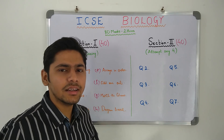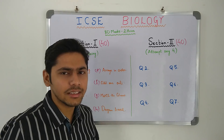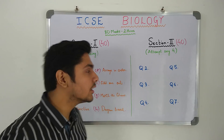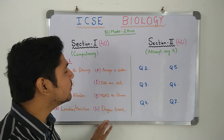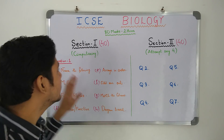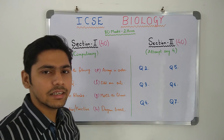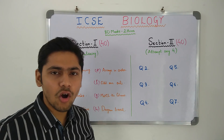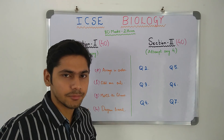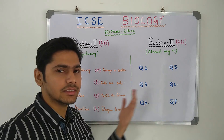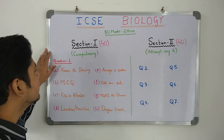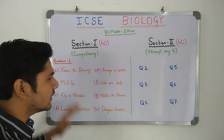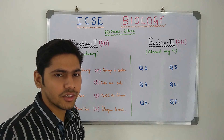The pattern is similar to chemistry. The question paper is divided into sections. Section 1 is 40 marks objective question type, and section 2 is 40 marks long question and diagrammatic question type. We begin with section 1. This is a compulsory section and you have to attempt all the questions here.